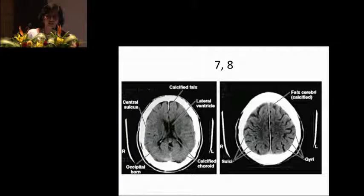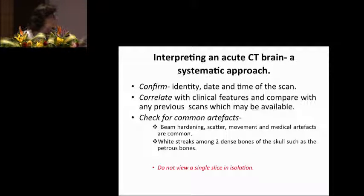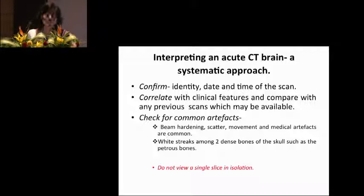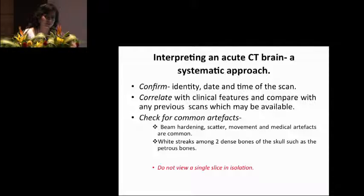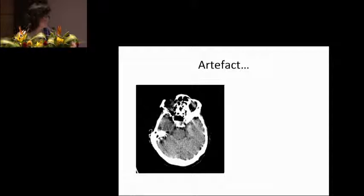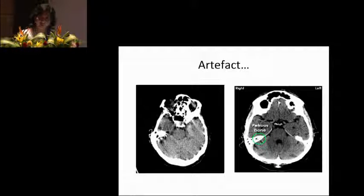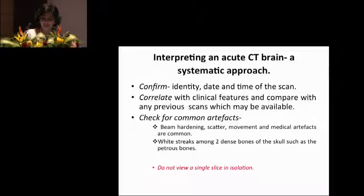When you are faced with an acute CT scan, you have to have a systematic approach to reading it. Start with confirmation: identify the patient, verify the date and time are right, correlate the clinical features, and compare with any previous scans. Once you've done that, check for common artifacts. CT scans have evolved over generations — we now have third or fourth generation scanners, yet certain artifacts remain. The best way to avoid being confused by artifacts is to see all films and not just look at one film in isolation. Artifacts usually appear due to the nature of the scan itself, tissue between two thick bones, movement, or foreign bodies.